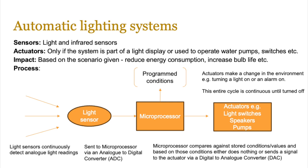Generally, how does this type of system work? You have light sensors which continuously detect analog light readings. These are then sent to a microprocessor via an analog-to-digital converter, or ADC. The microprocessor checks against its programmed conditions and then does nothing or sends a signal to the actuator via a digital-to-analog converter, or DAC. The actuator's purpose is to make a change in the environment through the use of motors, pistons, fans, or switches — in this case turning a light or alarm on depending on the type of system.